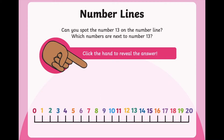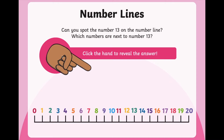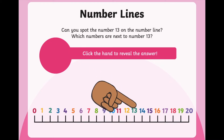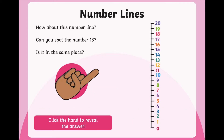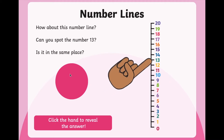Sometimes you might notice the number line in the classroom — that's another place where you might see the number 13. Can you point to the screen when you spot the number 13? It's in between the 12 and the 14. Let's check — great! If you found that at home, it was the green number. Here's another number line that looks a little bit different, but all the numbers are in the same place. Can you find the number 13 again? Well done!